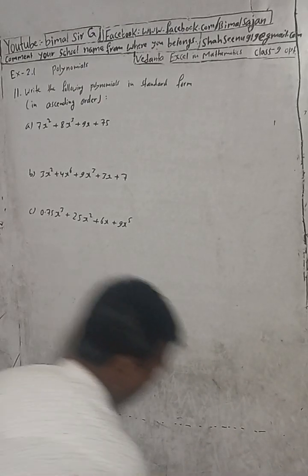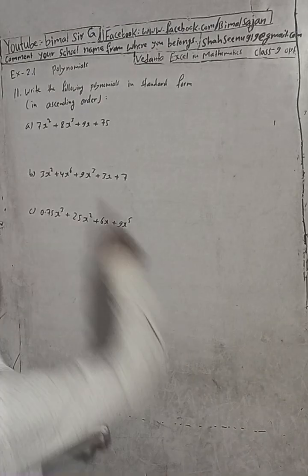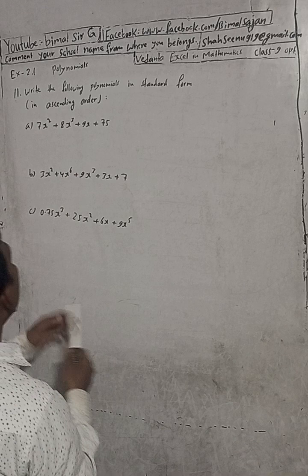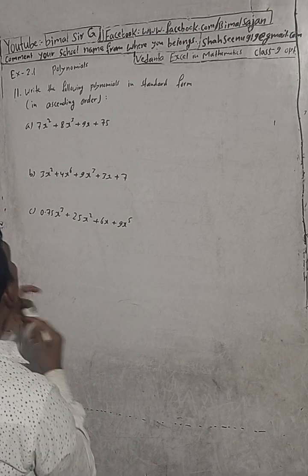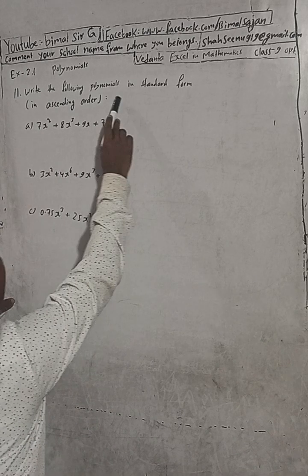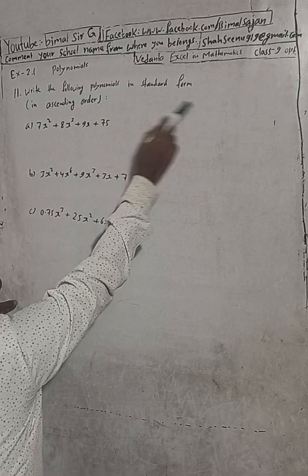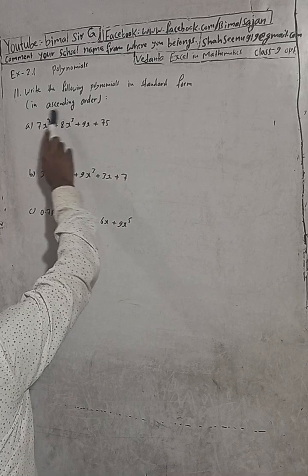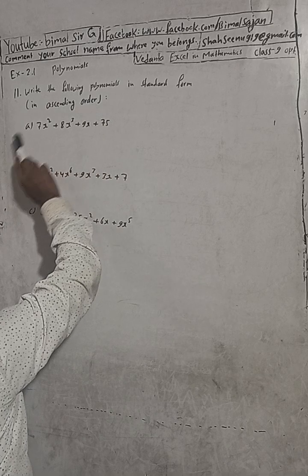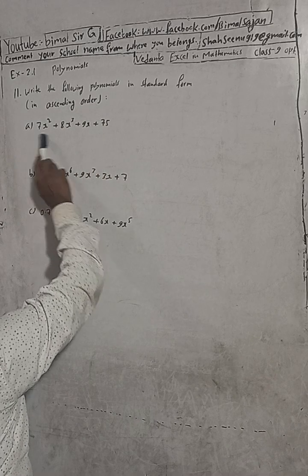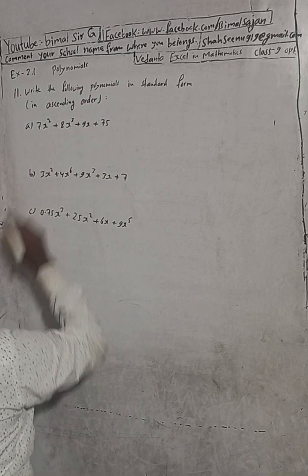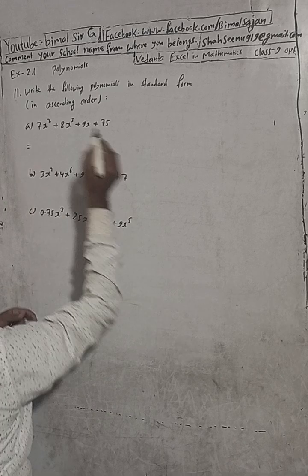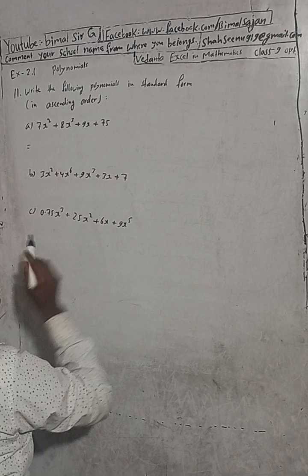The exercise is complete. Now this is 2.1 question number 11. Here the question is write the following polynomials in standard form. In standard form there is descending order and ascending order. We have to write this in ascending order. Ascending order means from small to big.